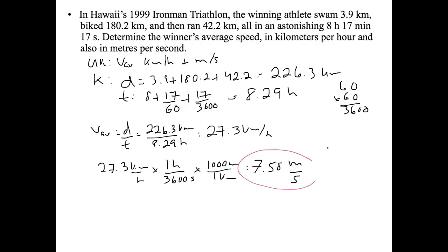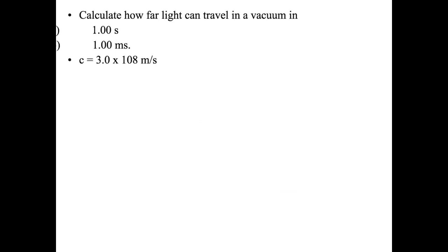Next question: calculate how far light can travel in a vacuum in (a) one second and (b) one millisecond, given that the speed of light is 3.0 times 10 to the 8 meters per second.